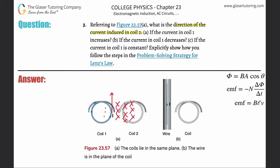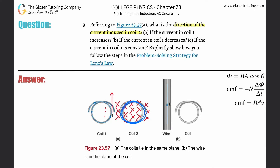The magnetic field, represented by x's going into the page, is increasing in strength. This is all about induction: a current will be induced in the second coil. I'm just highlighting the wire — it might be clockwise, we'll see. This changing magnetic field will induce a current in the wire.